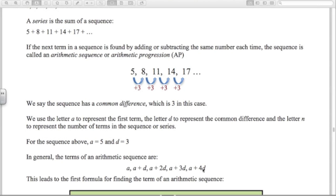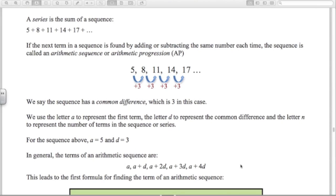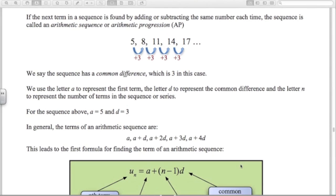The sixth term will have A plus 5D. That leads us to a general formula here.